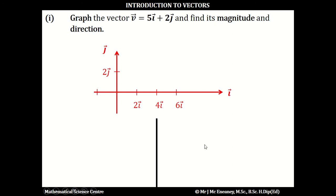In question 1, we're asked to graph the vector v, which is 5i plus 2j, and find its magnitude and direction. So if we graph this on an i and j plane, here we've got 5i, and then we're going to go up to 2j. So this is the vector v, which is 5i plus 2j.